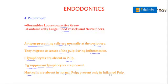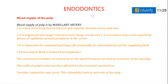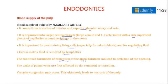Regarding blood supply, the maxillary artery supplies the pulp in the form of inferior and superior alveolar arteries and veins. It is organized into large central vessels, large venules, and one to two arterioles with rich superficial plexuses of capillaries. These are important for maintaining living cells like odontoblasts and for regulating fluid. Excess interstitial fluid is removed by lymphatics. Continued cementum formation at the apical foramen leads to occlusion of the opening, with the walls of the pulp vein first affected by cemental constriction.